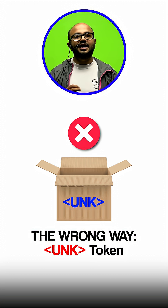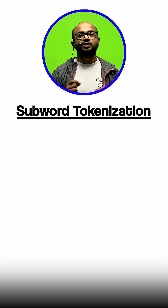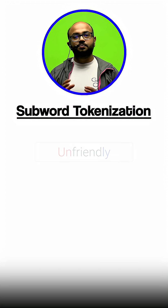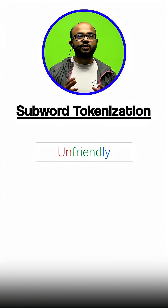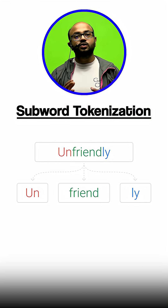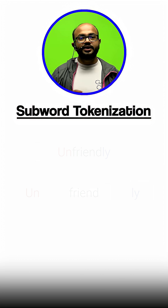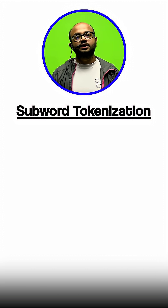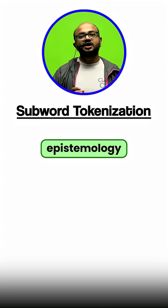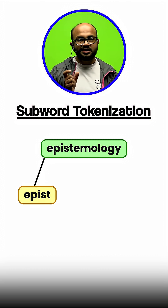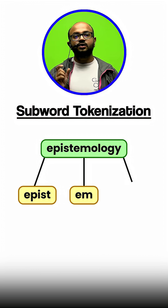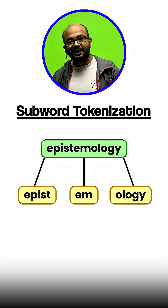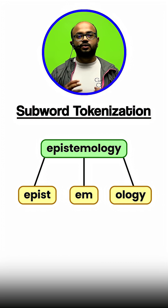The expert answer is subword tokenization. The idea is simple: you break down a rare or new word into smaller, known subword pieces. For example, the model might not know the word 'epistemology,' but it breaks it down into 'epist,' 'em,' and 'ology.' It can infer the meaning from its parts, and it is incredibly robust.